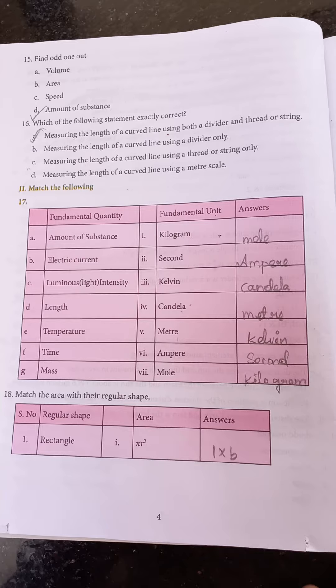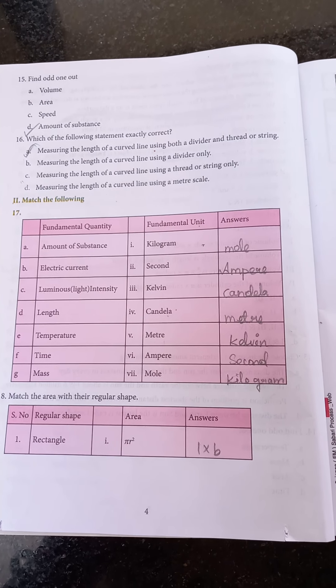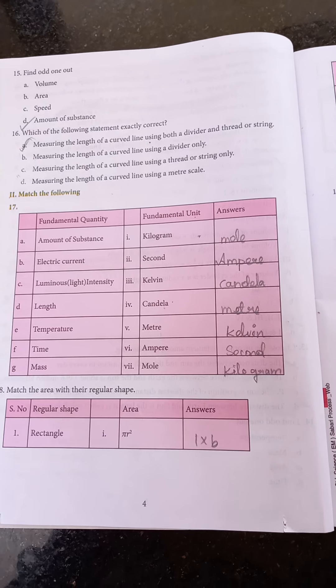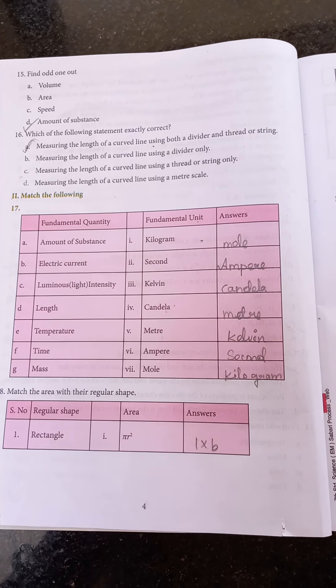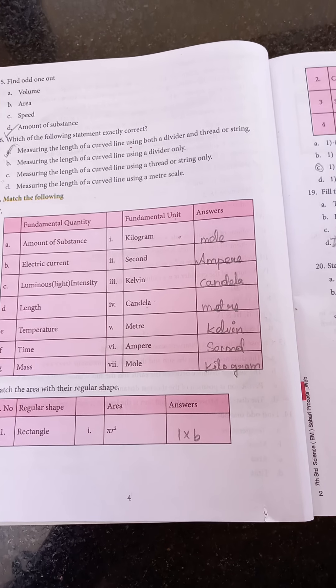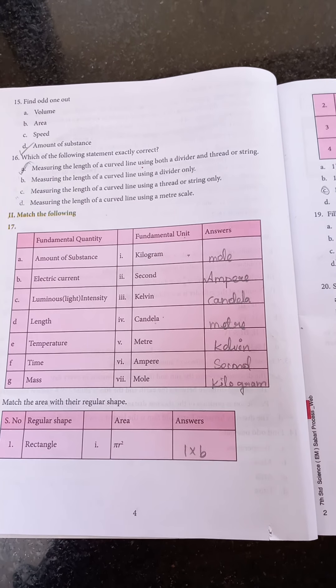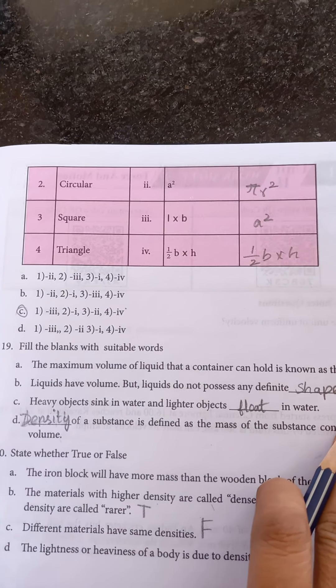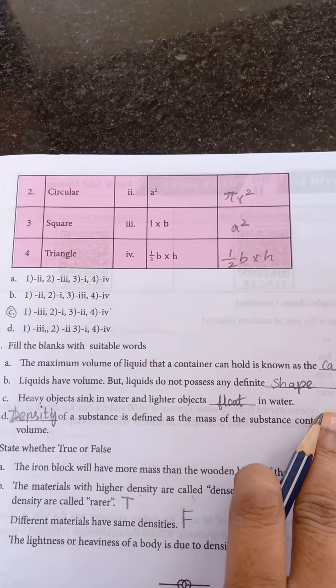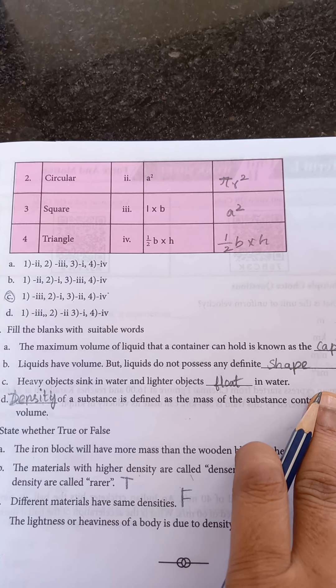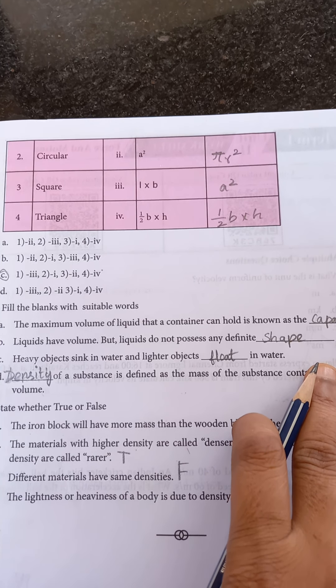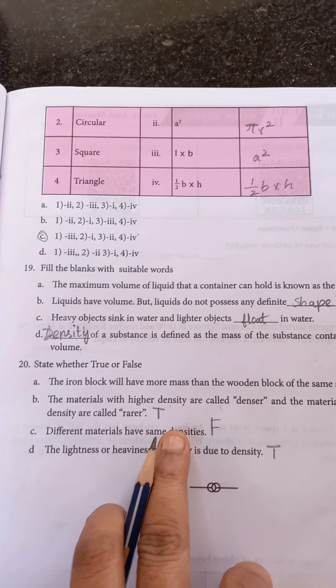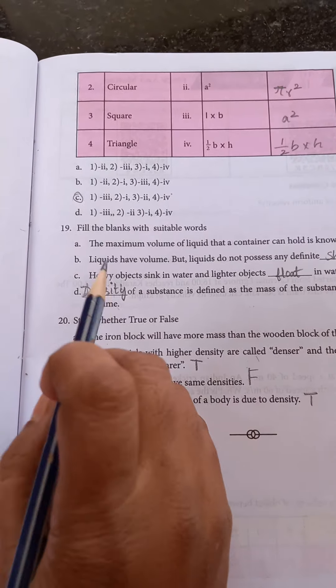18th also match the following. Some of the shapes and areas are given, so we have to match the shape according to the area. Rectangle, the answer is l into b, l means length and b is breadth. Circular, the answer is pi r square. Square is a square. The area of triangle is half bh, b means breadth, h means height. So the correct option is option C.